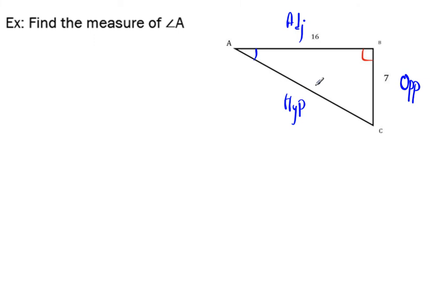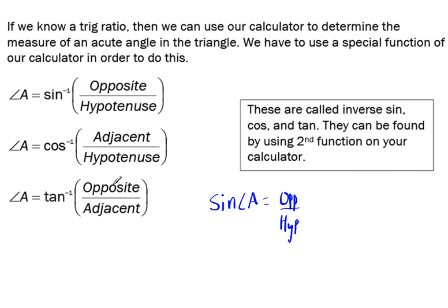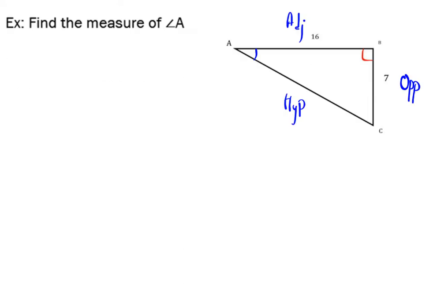So once we have that found, we can figure out, well, what sides do we have? We got the adjacent and the opposite side. So if you look back to our formulas, that leads us to have tan. So opposite over adjacent.